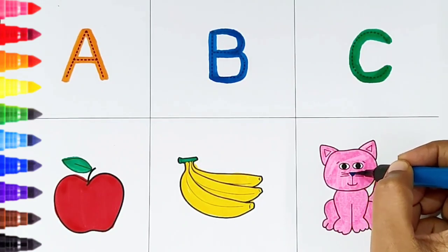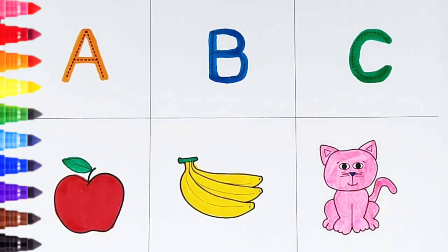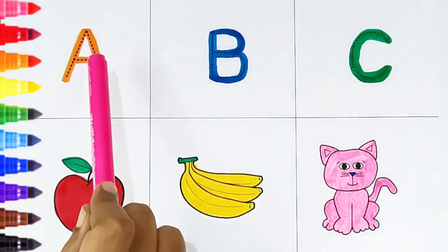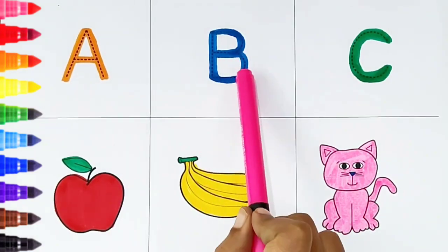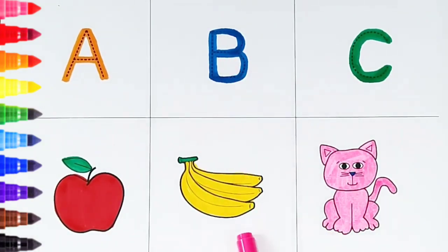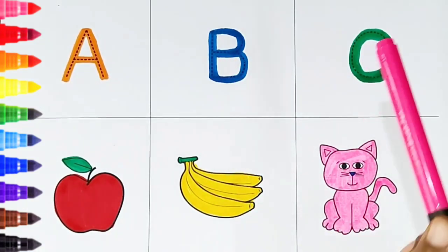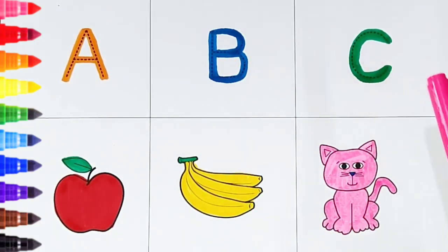Once again. A, A is for apple. B, B is for banana. C, C is for cat.